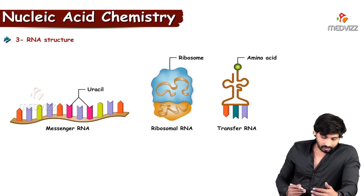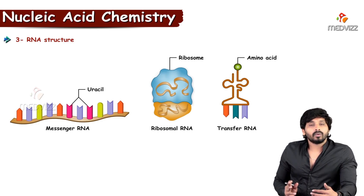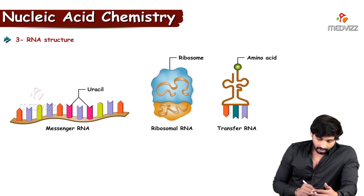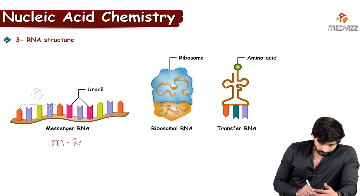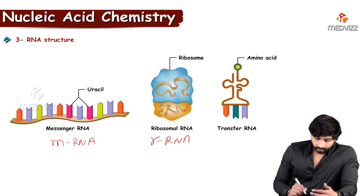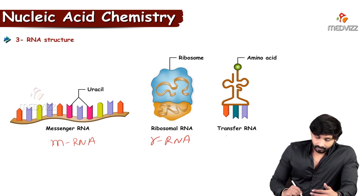Coming to the RNA structure — as we have studied, there are three types of RNA. The first is messenger RNA, in short mRNA. The second is ribosomal RNA, or rRNA. And the third is tRNA, that means transfer RNA.